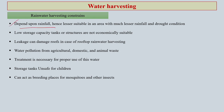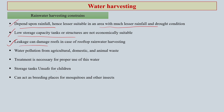Water harvesting is generally not suitable in areas with very little rainfall or drought conditions. Second, low storage capacity tanks or structures are not economically suitable for water harvesting. Third, leakage issues — if you have leakage problems, your entire investment and effort for water harvesting could be a failure.